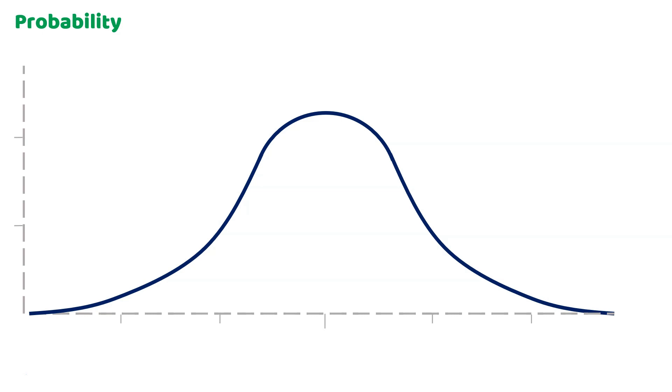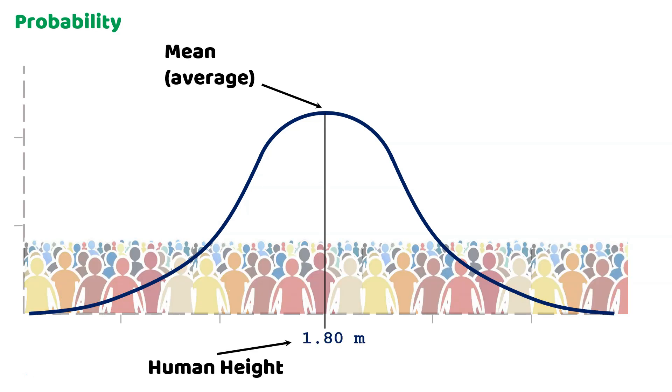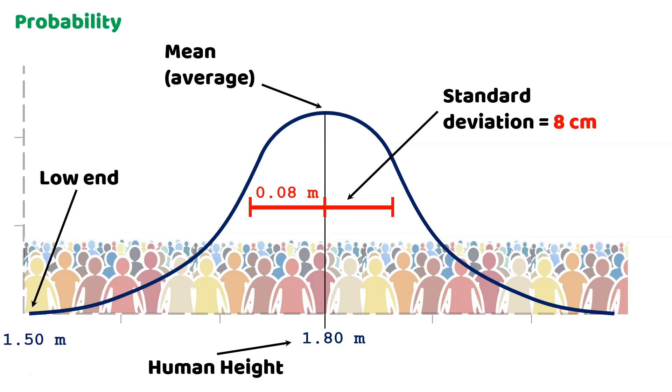In this case, let's imagine that this is a distribution of human heights in meters. It has a mean of 1.80 meters and a standard deviation of 8 centimeters. On the low end, we have 1.50 meters of height. On the high end, we have 2.10 meters of height.